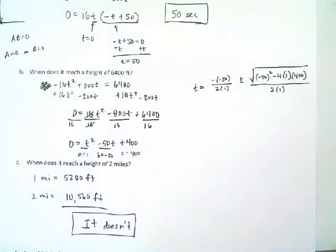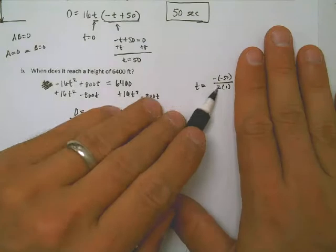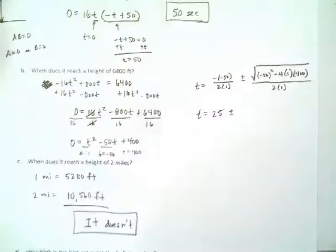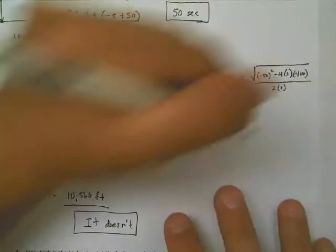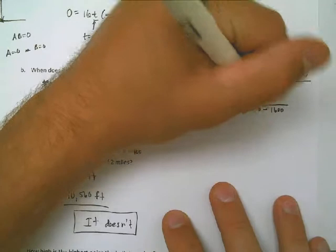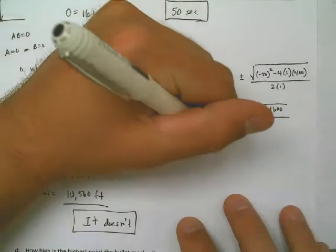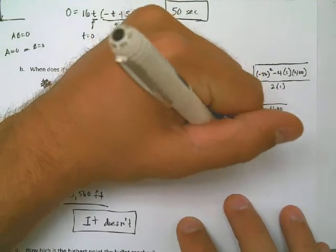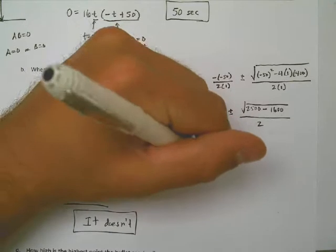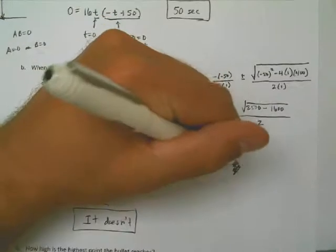Here we go. 50 squared is 2,500. 4 times 400 is 1,600. That's all over 2. A little bit closer. 2,500 minus 1,600 is my next step. That ends up being 900, and that's all over 2. So now I'm going to go on my calculator, and the square root of 900 is actually 30. So they've set it up nicely for you. It's 30 divided by 2, which is really just 15. 25, give or take 15 seconds,